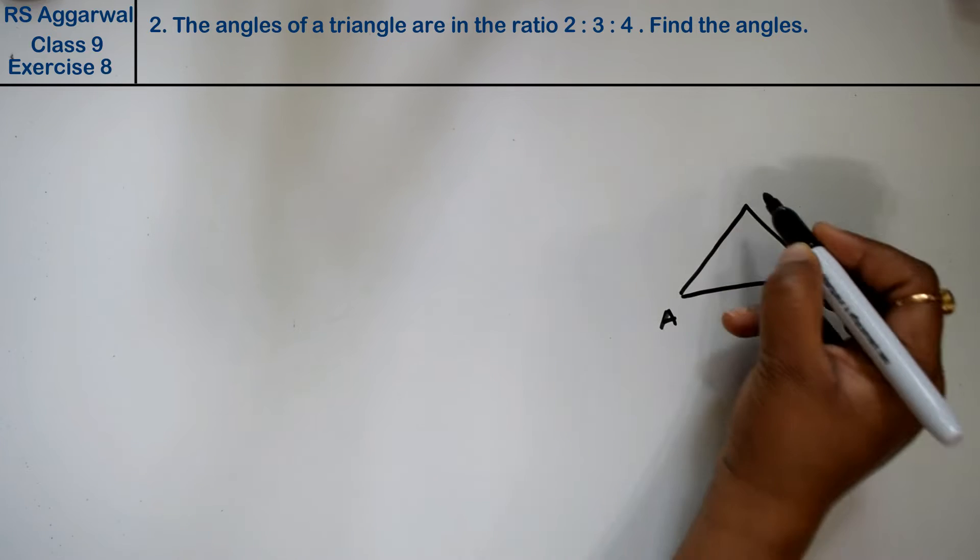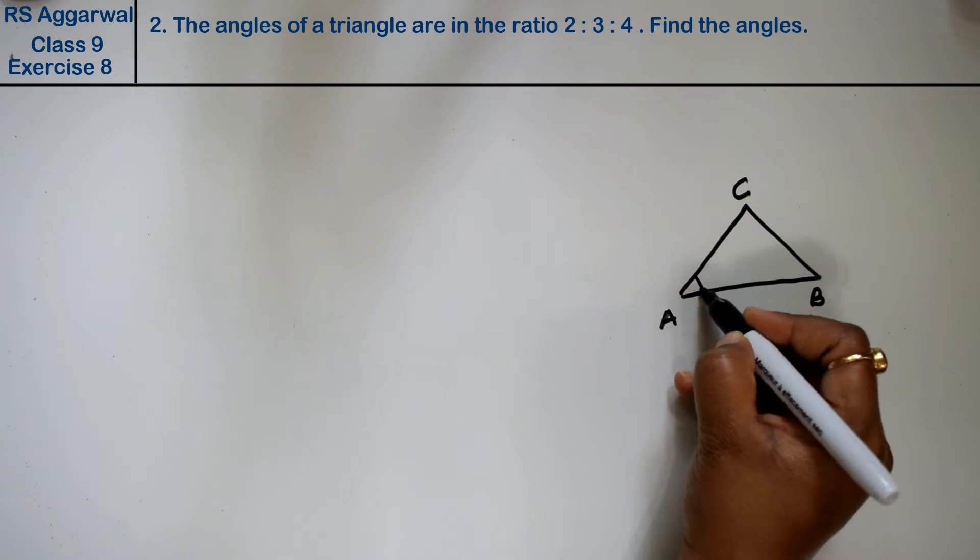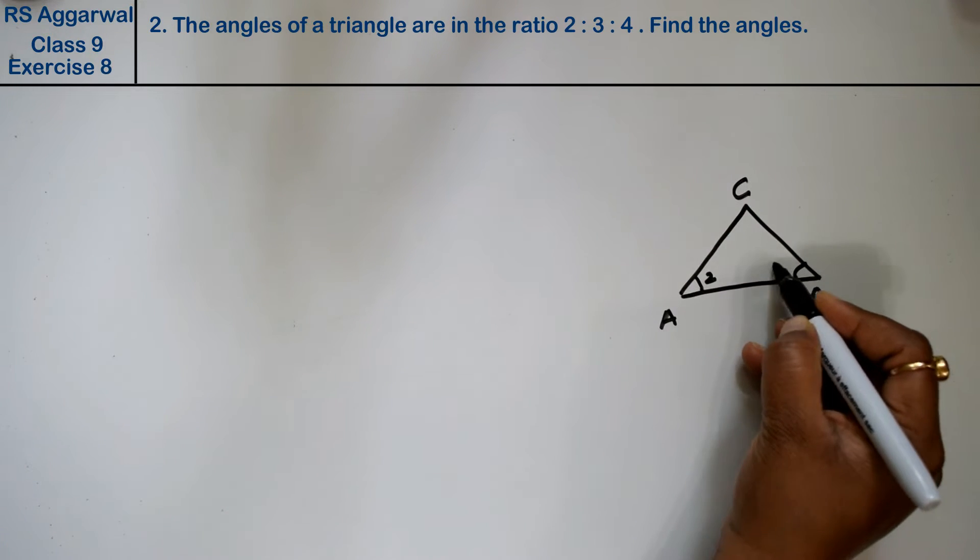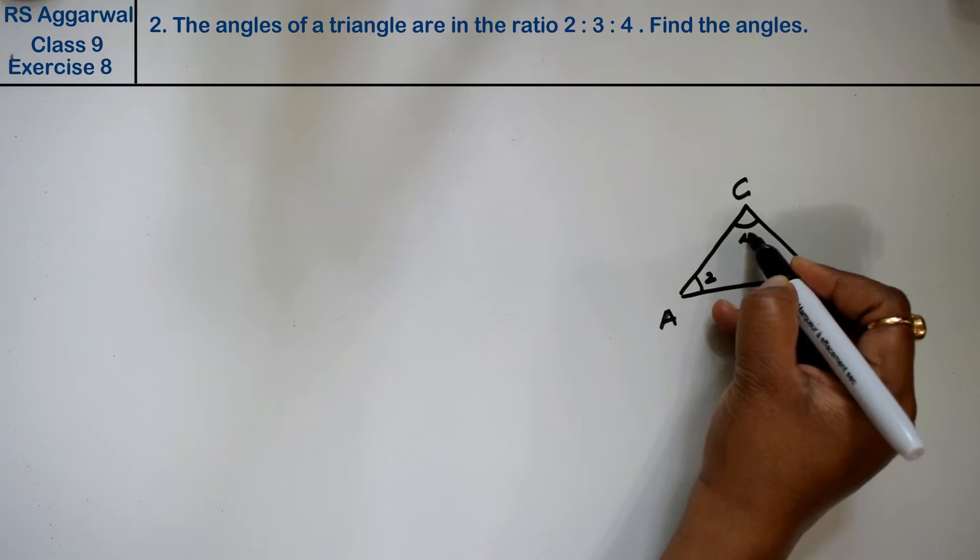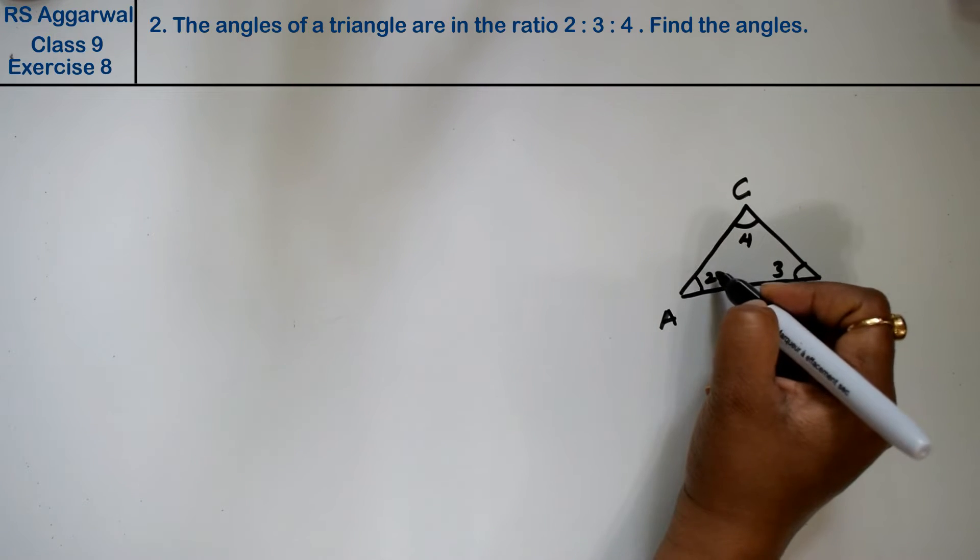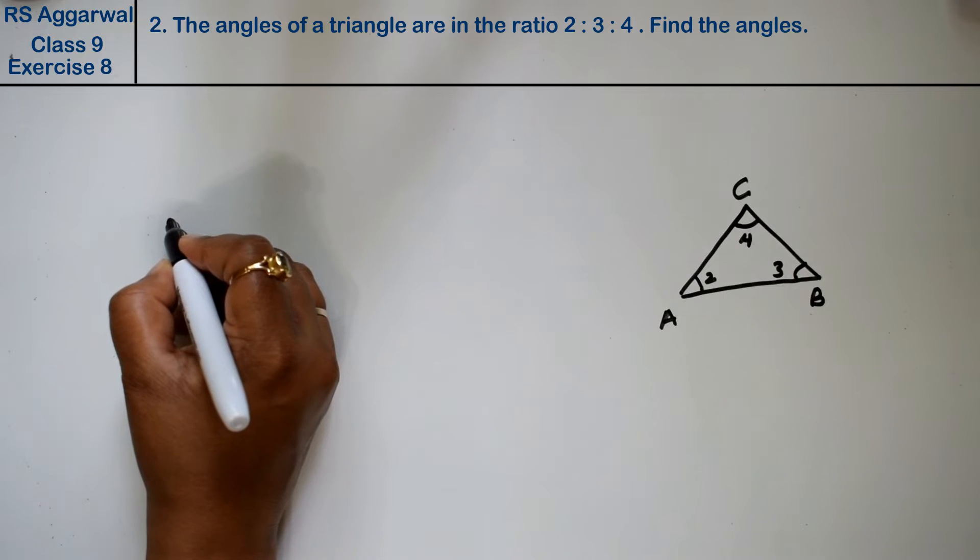This is triangle ABC. The angles are in the ratio 2:3:4. When we have a ratio like this, what do we do?